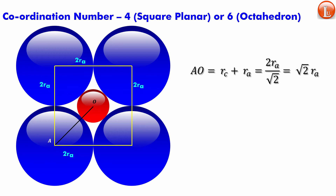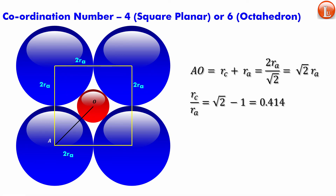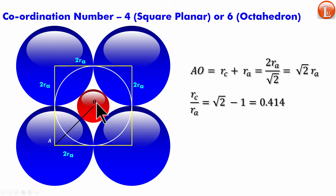From rᶜ + rₐ = √2·rₐ, we get rᶜ/rₐ = √2 − 1 = 0.414. So for a cation to touch four anions in a square planar arrangement, the minimum radius ratio is 0.414. Interestingly, the same radius ratio works for a coordination number of six — the octahedron. If we place an anion on top of the square planar arrangement, that top anion will also be in contact with the cation.